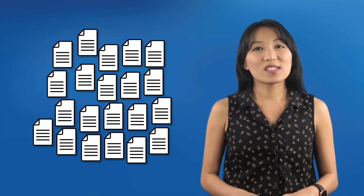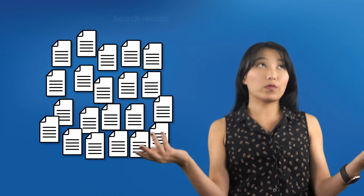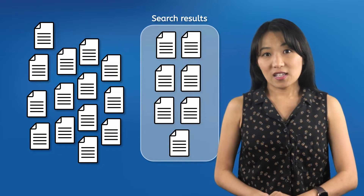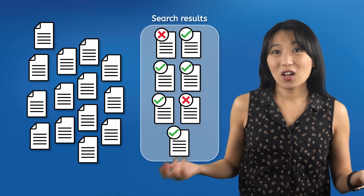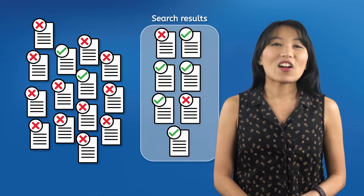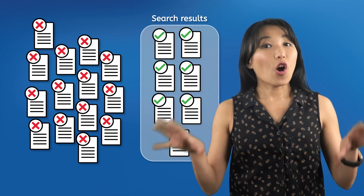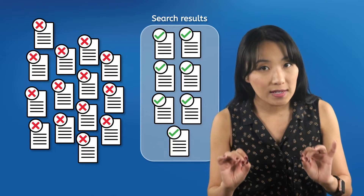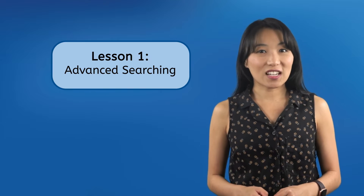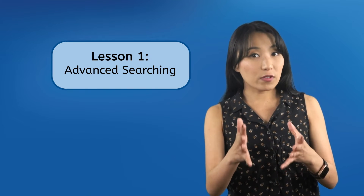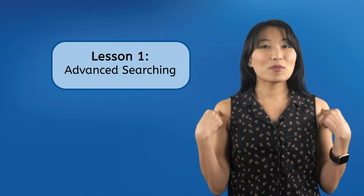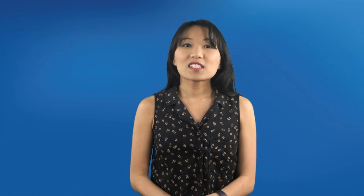Beginner researchers use simple search tactics — type in a few words and hope for the best. But this basic approach has significant flaws: it often returns irrelevant results and leaves out helpful pages. There are tricks to make sure you're getting all the relevant information and only the relevant information. The first lesson in this unit will teach you how to use advanced search techniques to find all helpful results while leaving out irrelevant ones.